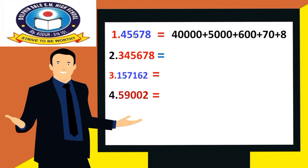Next, five is in thousands place, so five after three zeros means five thousands. Six is in hundreds place, so we write six hundred — six after two zeros. Seven is in tens place, so seventy plus eight. The expanded form of 45,678 is: forty thousand, plus five thousand, plus six hundred, plus seventy, plus eight.